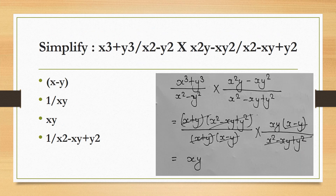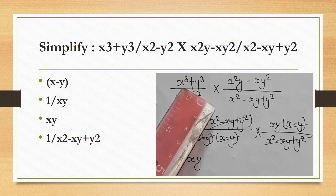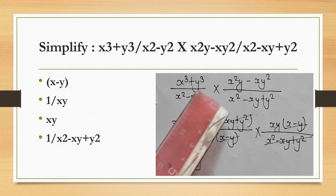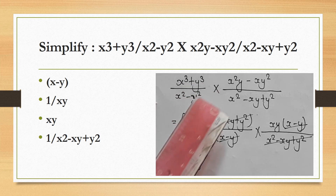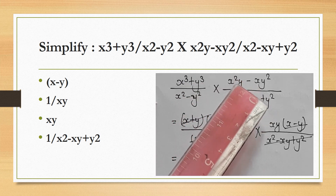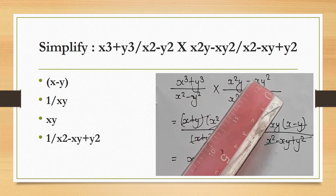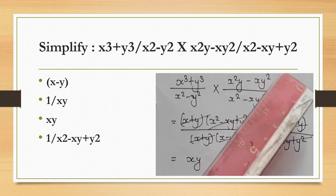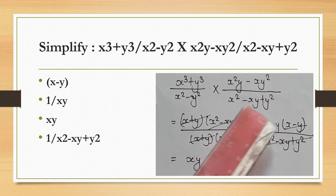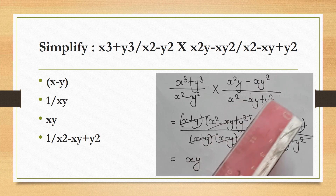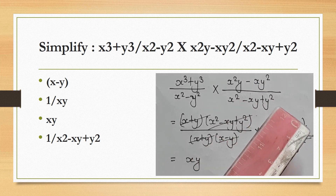Simplify: (x³ + y³)/(x² − y²) × (x²y − xy²)/(x² − xy + y²).